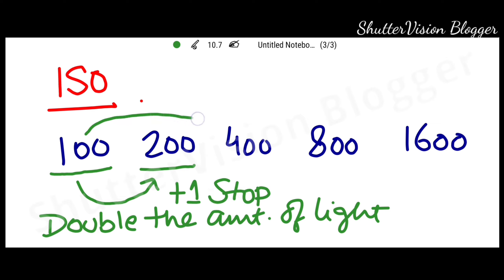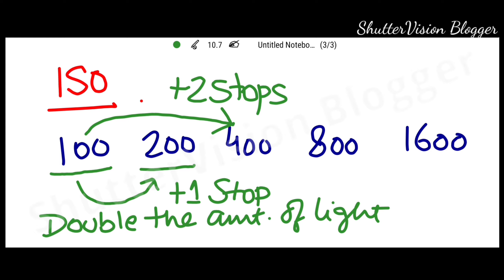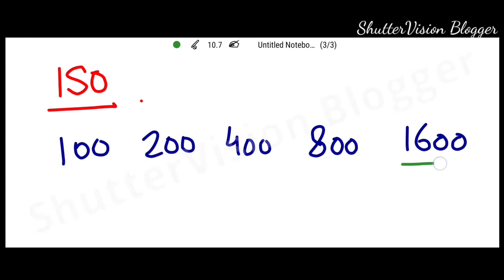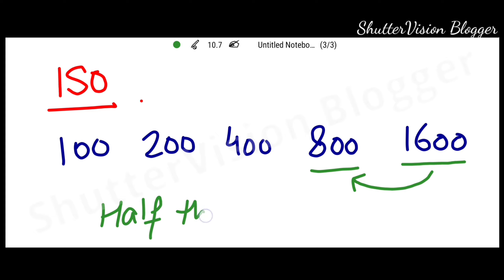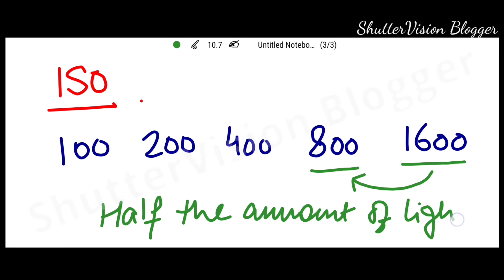Now if we jump from 100 to 400 ISO values, then we will add two stops of light to the image. Now suppose that we lower down from 1600 ISO values to 800. That means that we reduce the amount of light. But how much light is reduced? This time we are adding half the amount of light. In other words, we can say that we are reducing one stop of light.